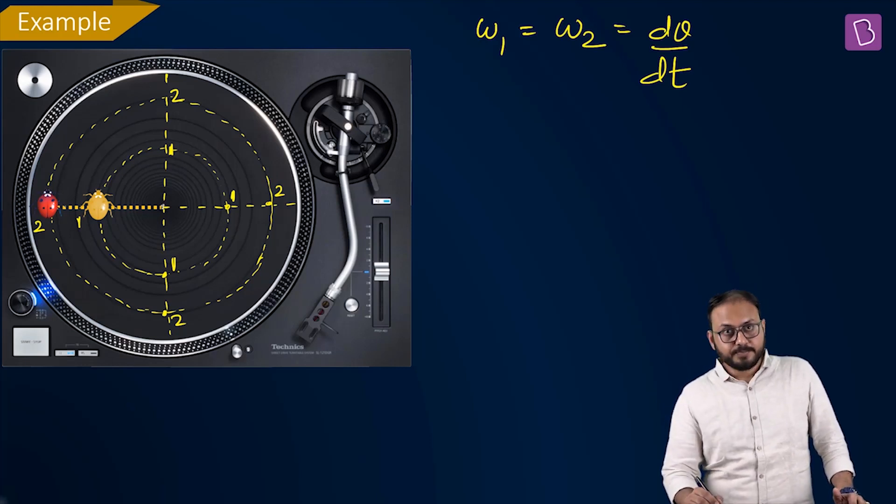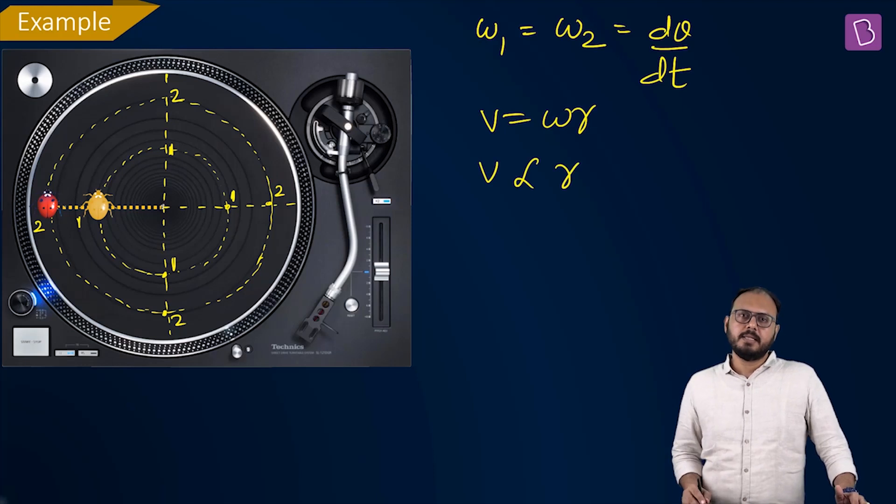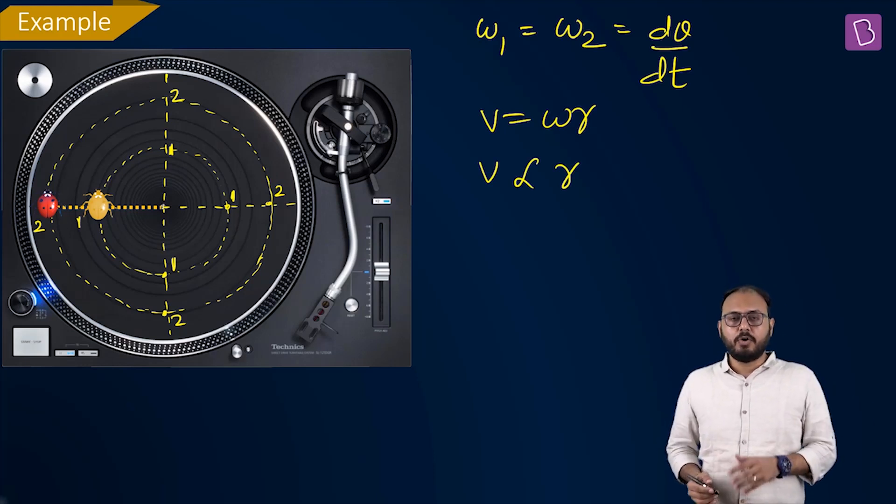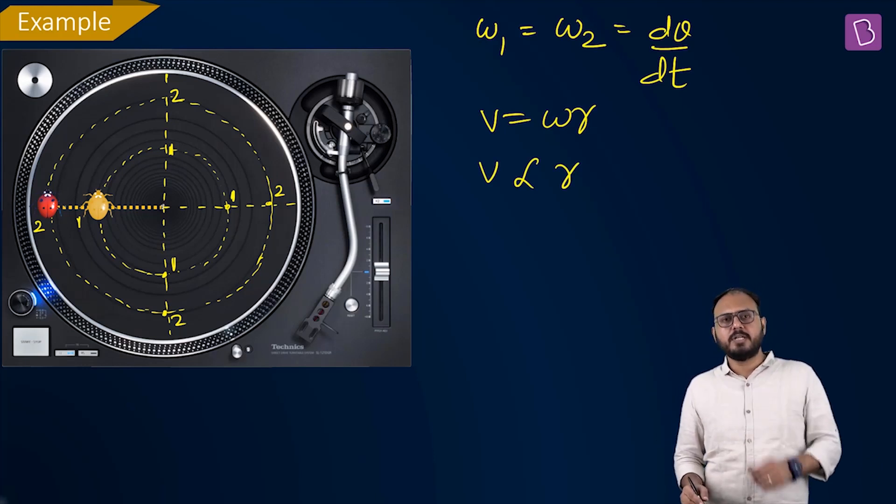So v equals ω r. Omega is same. That means v proportional to r. That means the one which has higher radius will also have higher speed.